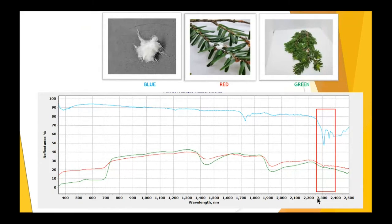Here's just another example. The next step was to take a more representative sample that has more characteristics of what an infestation in the field would look like. The photo in the middle labeled red displays the heavily infested hemlock twig — you can see the woolly substance bunched together there.